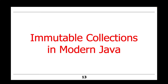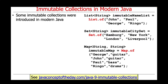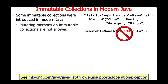Thus far, our focus has been on individual immutable objects. However, modern Java also supports immutable collections of objects. Some new immutable collections were introduced in Java 9, including those returned from the List.of factory method, the Set.of factory method, and the Map.of factory method.